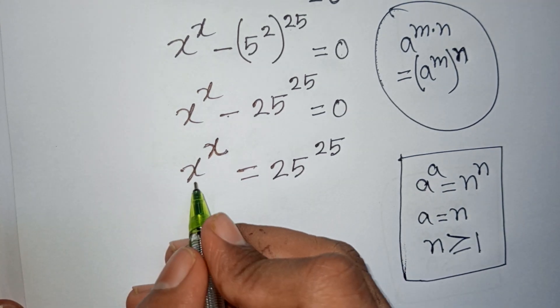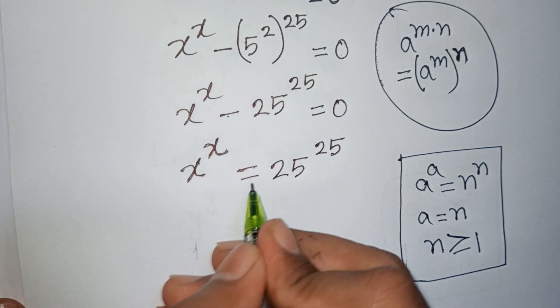So according to this rule, by comparison, x = 25.